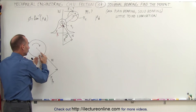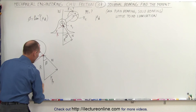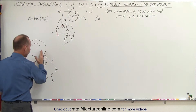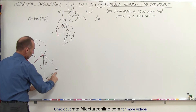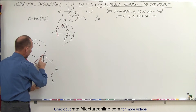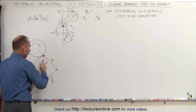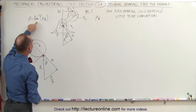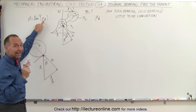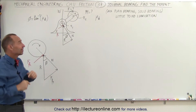Once it begins to slip, there is a singular point of contact where we have the normal force in one direction, the reaction force in another direction, and the friction force which can be drawn on either side. We can find the angle phi between the normal force and the reaction force by taking the arctangent of the coefficient of kinetic friction.